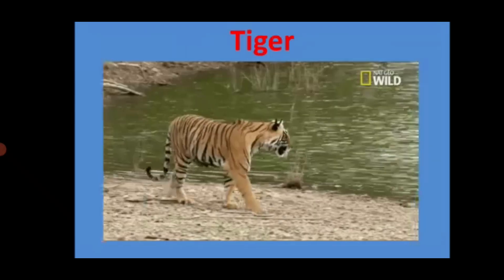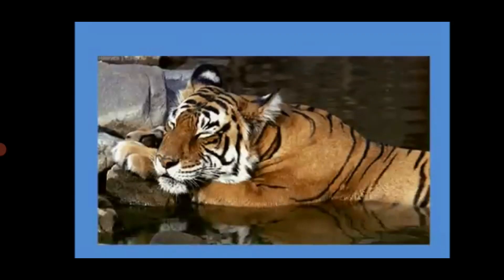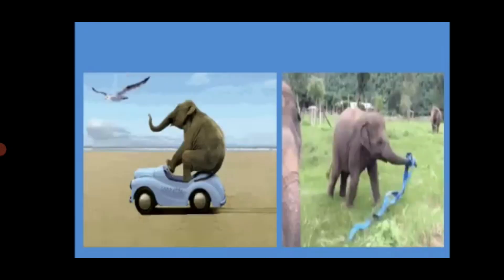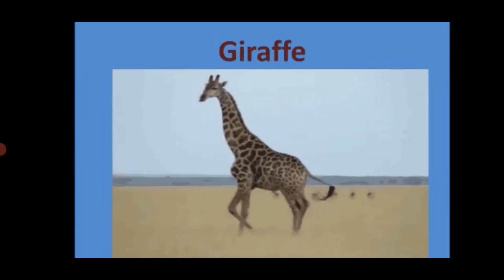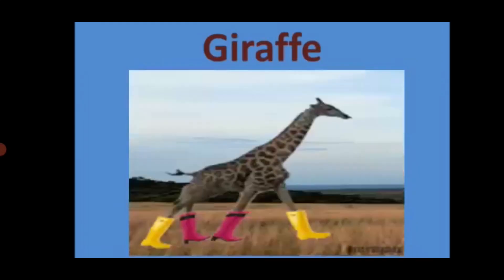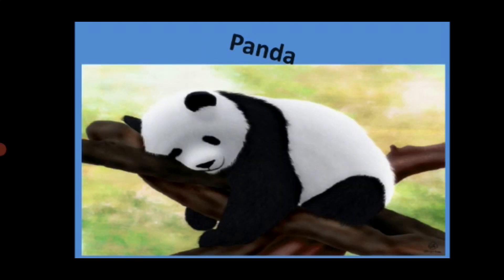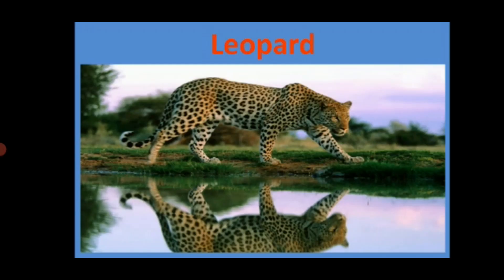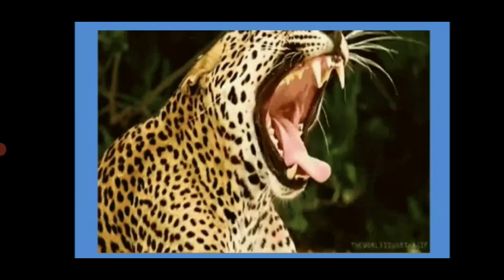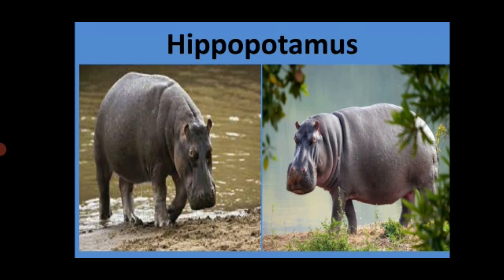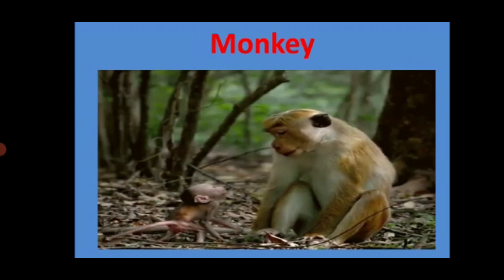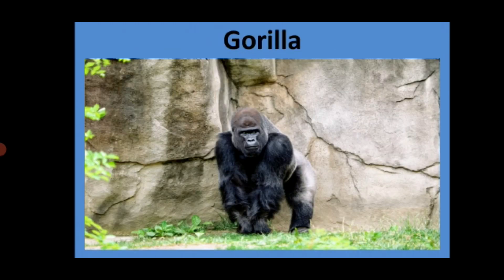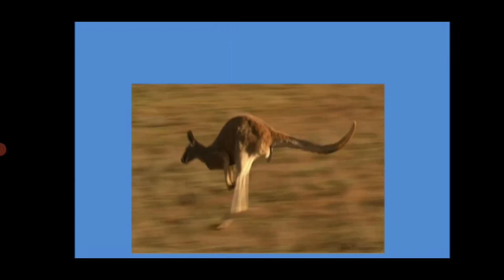This is a lion. Yes, lion is the king of the jungle. Tiger — tiger is a national animal. Elephants, giraffe, panda, rhinoceros, leopard, hippopotamus, monkey, gorilla, kangaroo.